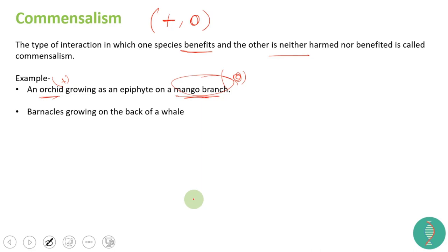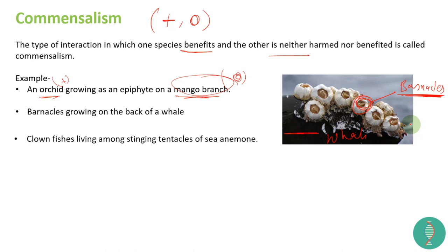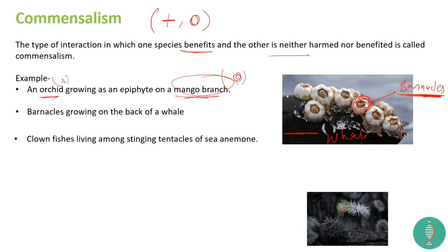Barnacles growing on the back of a whale is another example. The barnacles are benefited — they get to move to new locations and access food — while the whales are neither benefited nor harmed. Similarly, clownfish hide among the tentacles of a sea anemone to get protection from predators, while the sea anemone is not harmed.